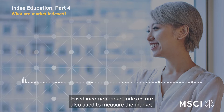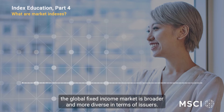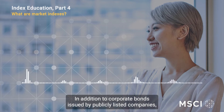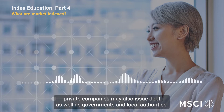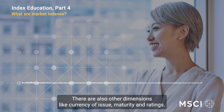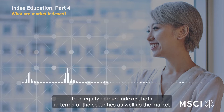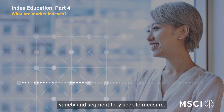Fixed income market indexes are also used to measure the market, but while the equity market covers only publicly listed companies, the global fixed income market is broader and more diverse in terms of issuers. In addition to corporate bonds issued by publicly listed companies, private companies may also issue debt, as well as governments and local authorities. There are also other dimensions like currency of issue, maturity, and ratings. Fixed income market indexes are generally broader than equity market indexes both in terms of the securities as well as the market variety and segment they seek to measure.